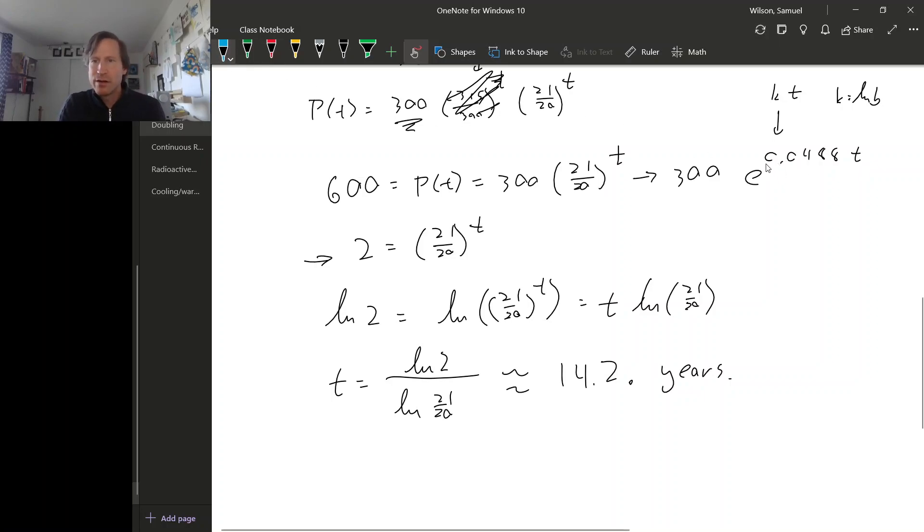This number right here is called a growth rate. So sometimes in growth situations you'll see this described as the population grows at 4.88% annually. But we have to actually be careful with stating the growth rate this way. Because the way that this is stated it seems to say that after one year the population will be 4.88% bigger. And that's actually not quite what this kind of growth rate is saying.